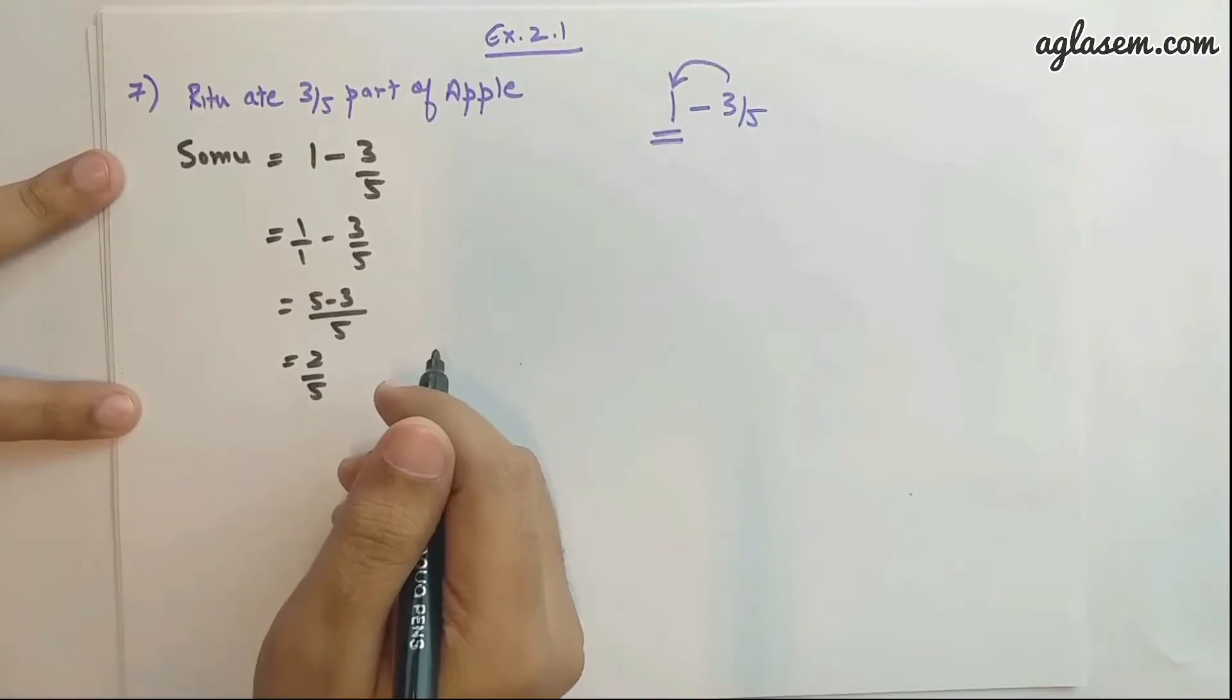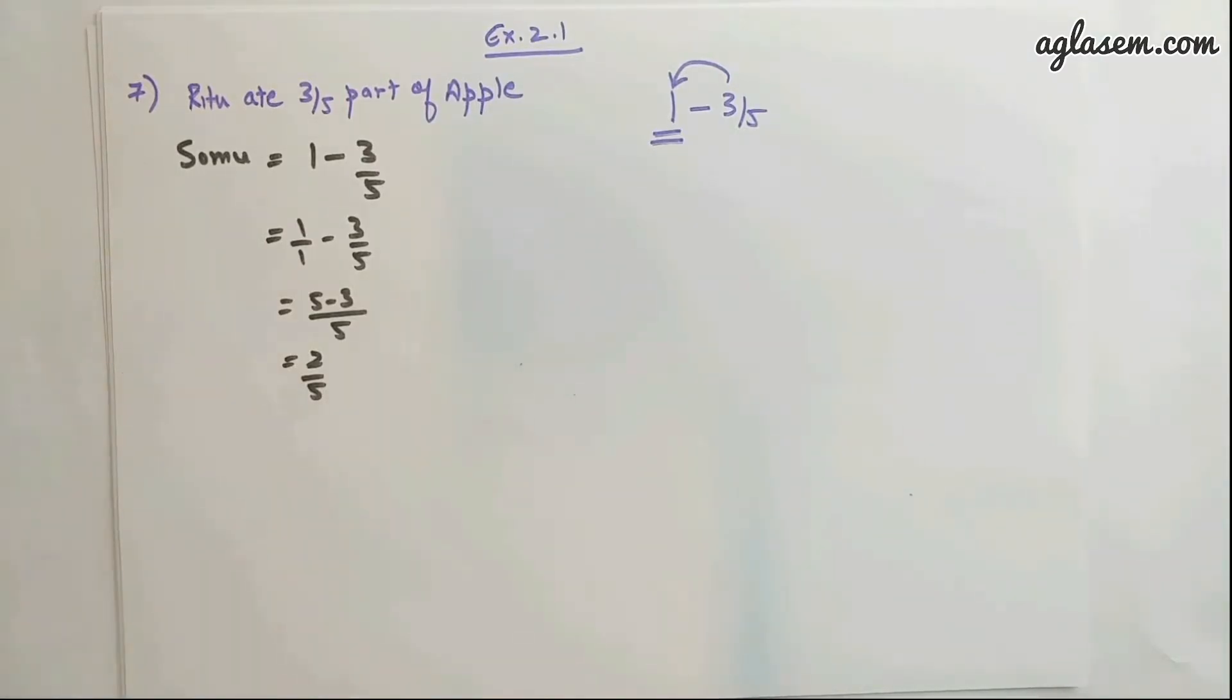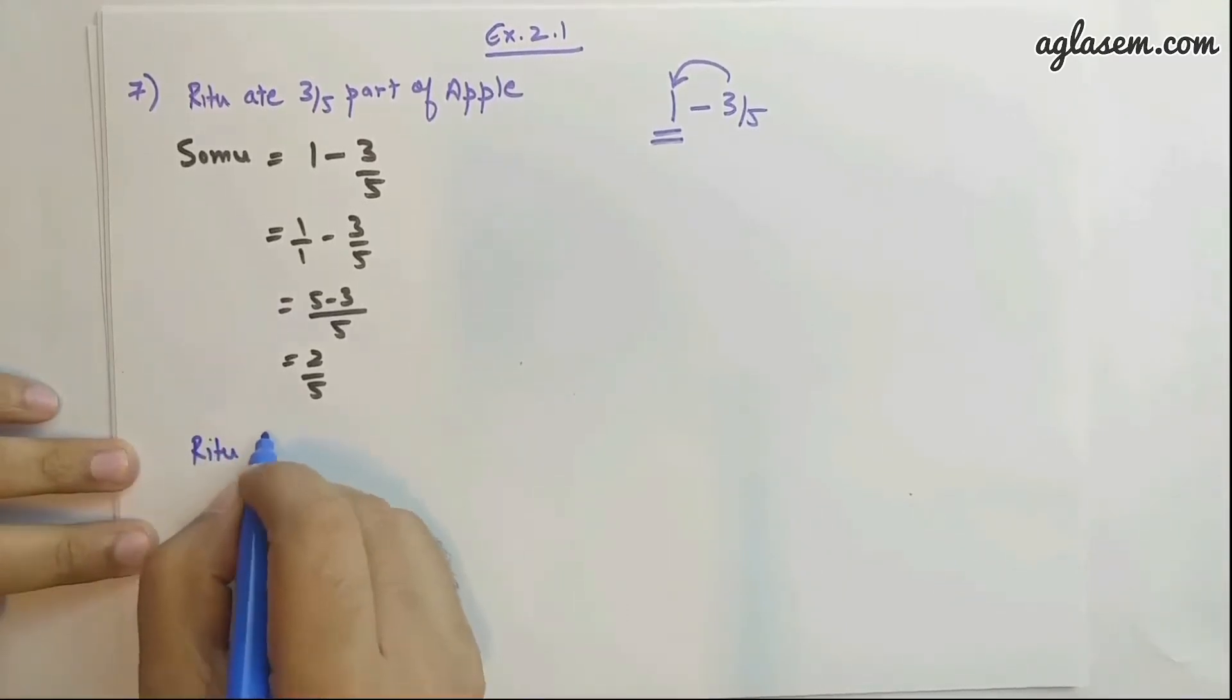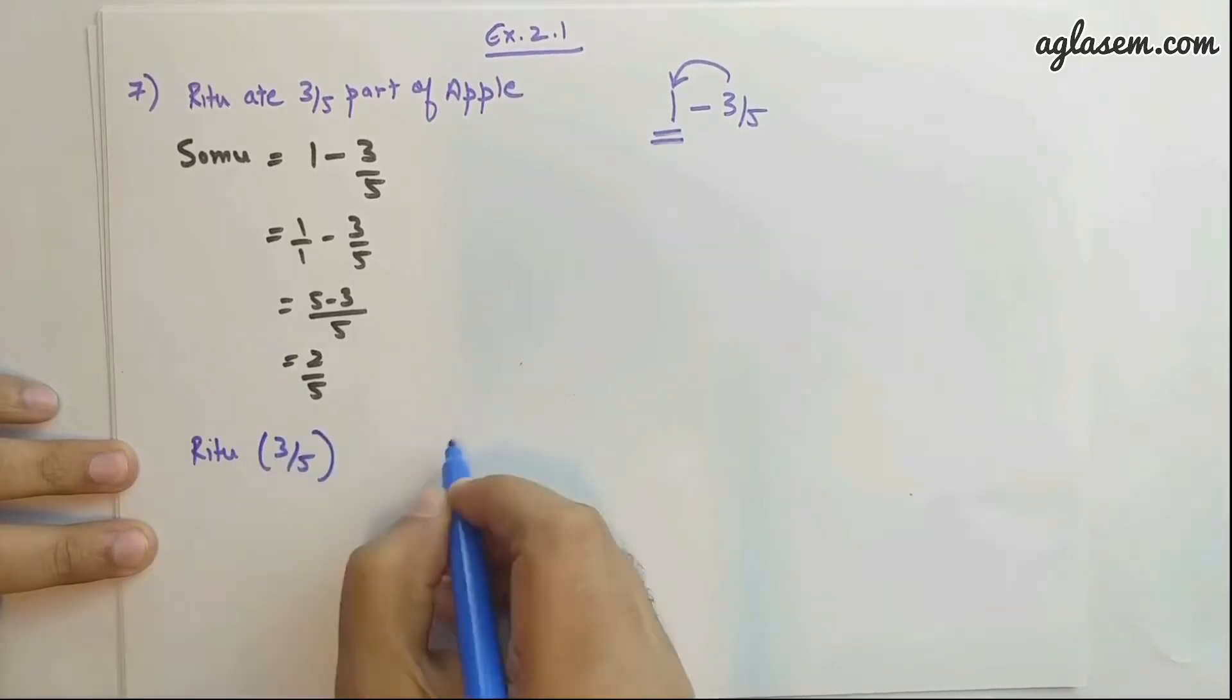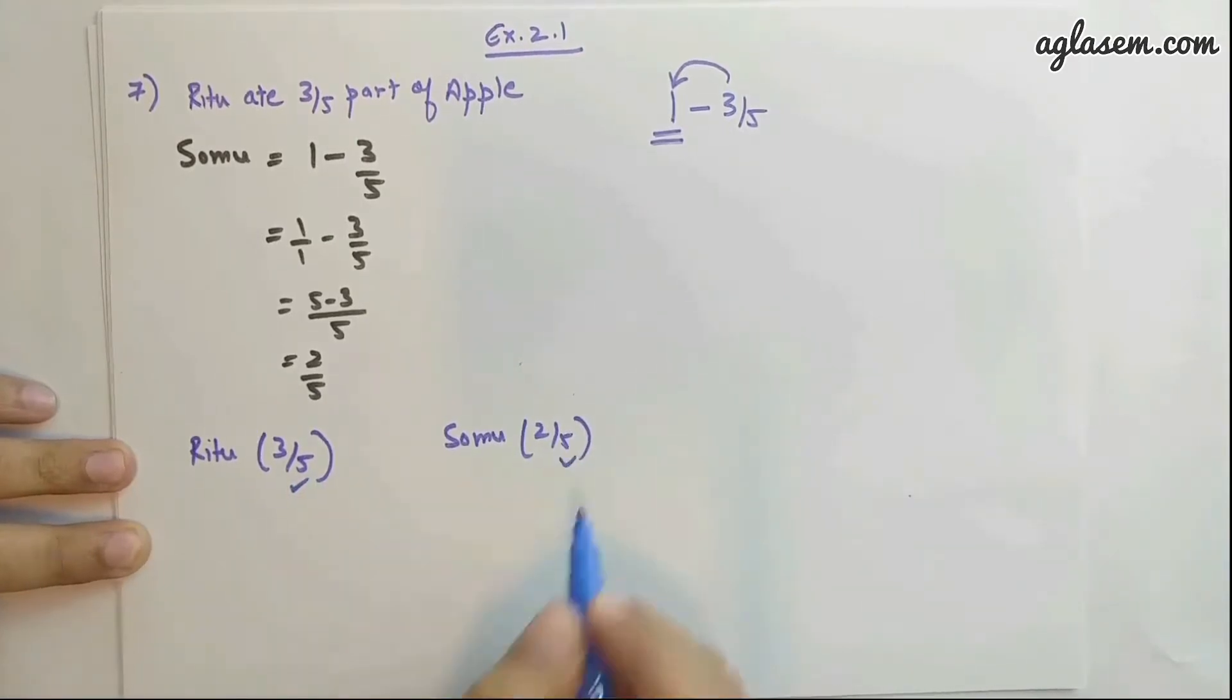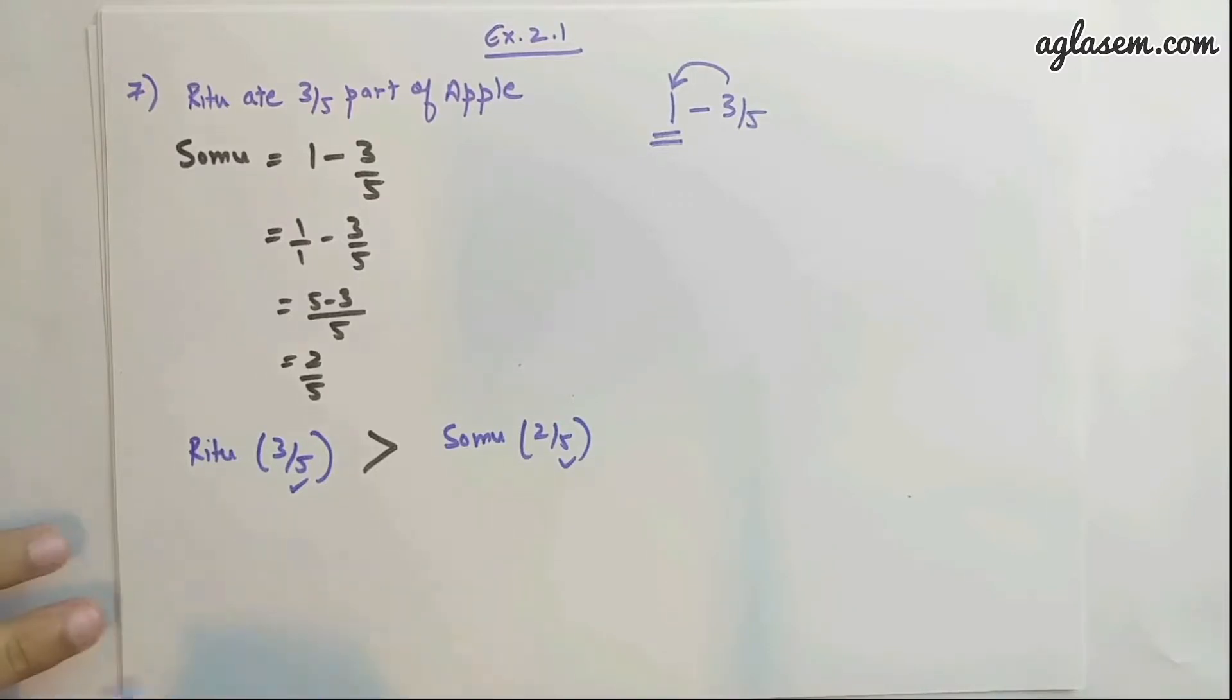Now who had the largest share? Obviously it's very clear. Ritu ate 3/5, Somu ate 2/5, and since these are like fractions, you can say Ritu ate more. But by how much? For that you need to calculate the difference between Ritu's share and Somu's share. So on comparison, you can write...